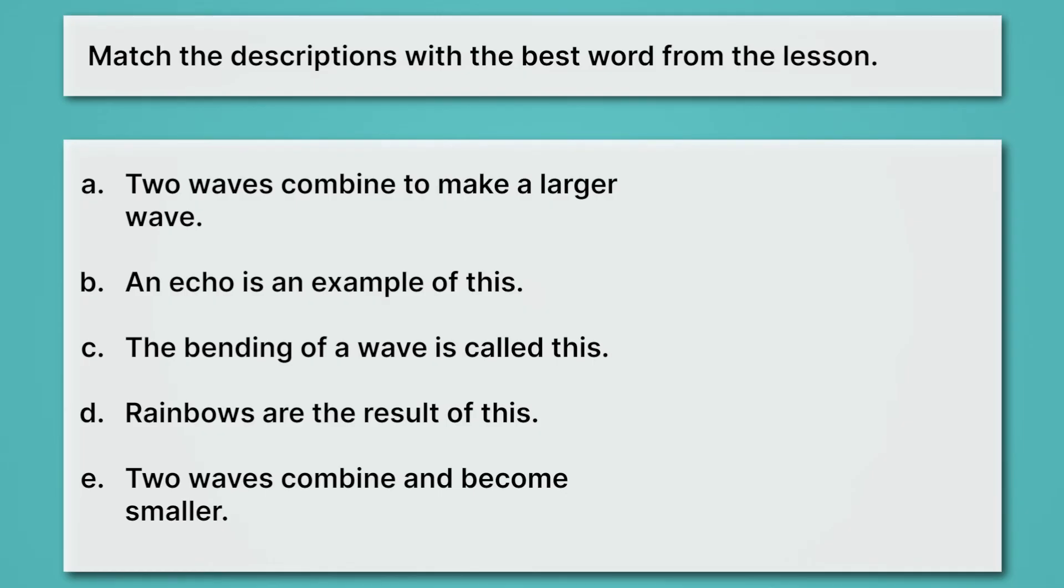Alright, let's review the answers. For A, it says two waves combine to make a larger wave. Well, when two waves combine, they're interfering. And because it's making a larger wave, that's constructive interference.